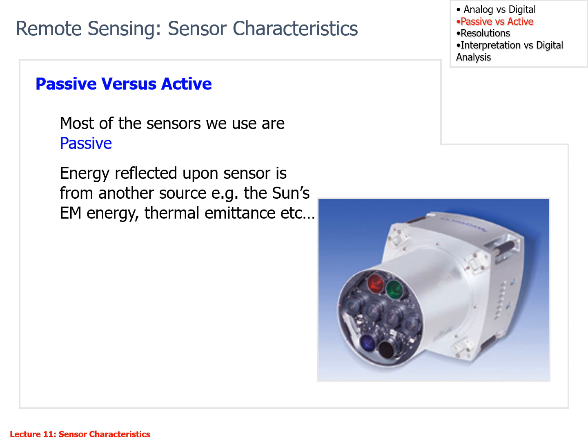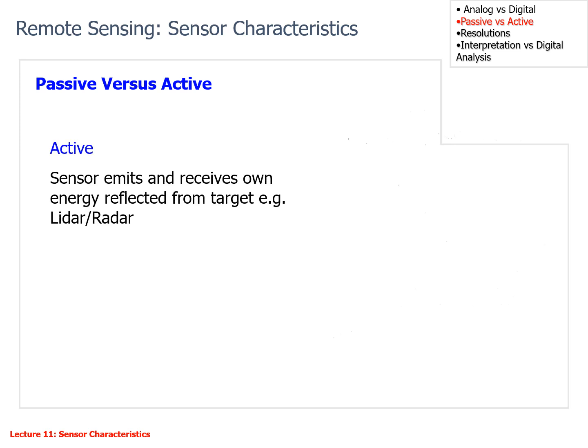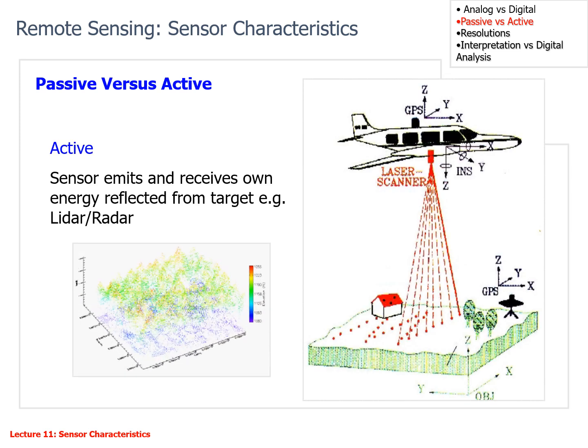Most of the sensors we use are passive, meaning the energy received by the sensor comes from another source — for instance, the sun's electromagnetic energy or emitted thermal energy. Active sensors emit and then receive energy they have transmitted: the sensor emits energy and receives the reflected energy back from a target. These are generally LIDAR or radar sensors.